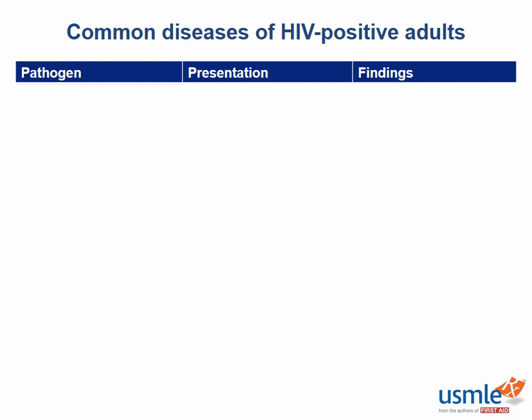This makes sense. As we lose our bodyguards, we start to be more susceptible to different infections that otherwise would really not be a problem. The important CD4 counts to remember are 500, 200, and 100 cells per millimeters cubed — 5, 2, and 1. At each of these checkpoints, you need to start thinking of different opportunistic infections.